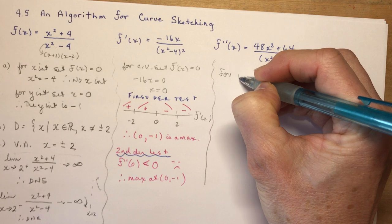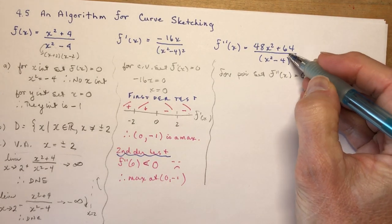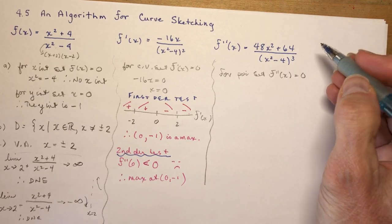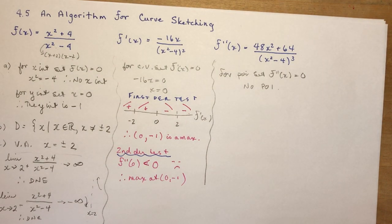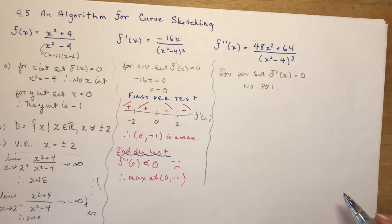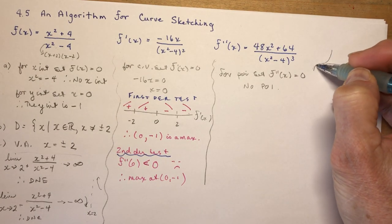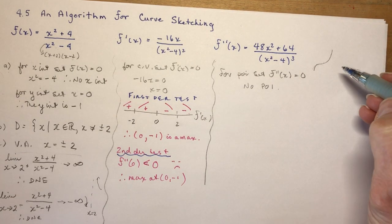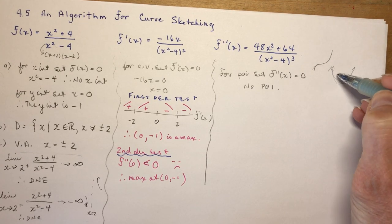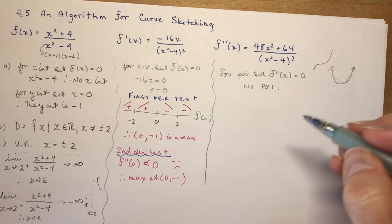For points of inflection, set f″(x) = 0. I get 48x² = −64, which has no real solutions — so there are no points of inflection. But that doesn't mean there's no concavity; it just means there's no change in concavity. A function can be continually concave up or always concave down, like a parabola or a fourth-degree function.